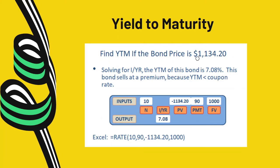On the other hand, if a bond is sold at premium, the current price will be more than one thousand dollars — for example one thousand one hundred and thirty-four dollars. The bond still offers 9 percent coupon interest payment of ninety dollars, matures in ten years. Solving for r gives a rate of return equal to 7.08 percent. The yield to maturity is less than the 9 percent coupon interest payment because this bond is sold at a premium — buying at an expensive price lowers the rate of return.